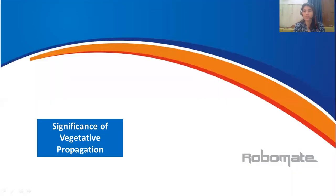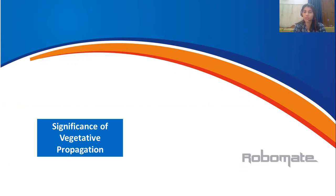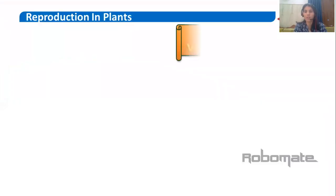Good evening friends. Till now we discussed the types of vegetative propagation — natural methods and artificial methods. Now in this video we are going to end this topic, that is asexual reproduction. We are going to discuss about the significance of vegetative propagation, which is important for theory as well.